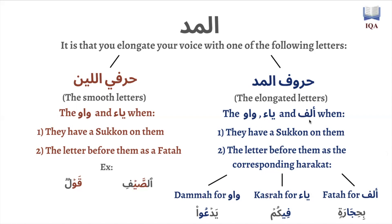So whenever you have a waaw, a ya, or an alif and these two conditions are met, these letters are going to be called huruf al-mad. When you have a waaw with sukun and the letter before it has a dhamma, you elongate the 'u' sound — so instead of saying 'yadaʿu', you say 'yadaaaaʿu'. Likewise, when the ya has sukun and is preceded by a kasra, you elongate the 'e' sound — so instead of 'fikum', you say 'fiiikum'.